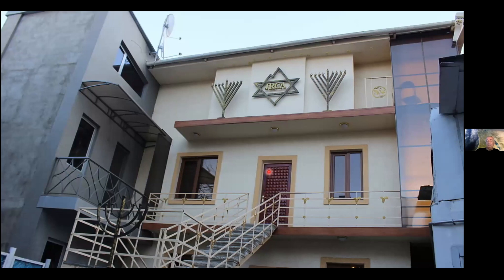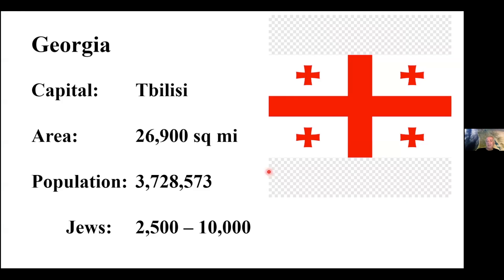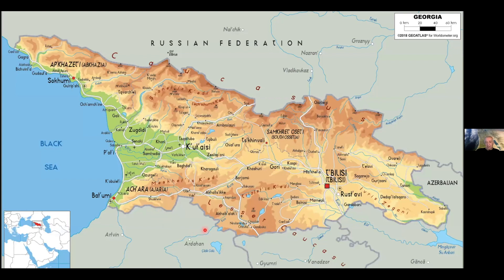Today there is only one functioning synagogue in Armenia, with a small Jewish population, many of whom do not live there permanently. Moving to Georgia — we cannot even estimate how many Jews there are, as many hold dual and triple citizenship in Georgia, Russia, and Israel, making a precise figure impossible.